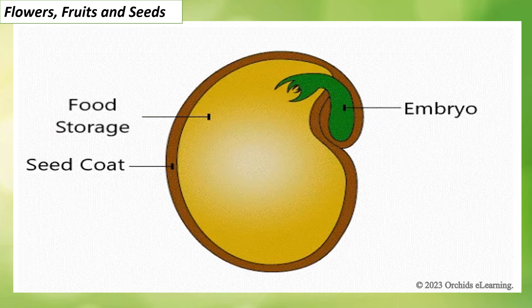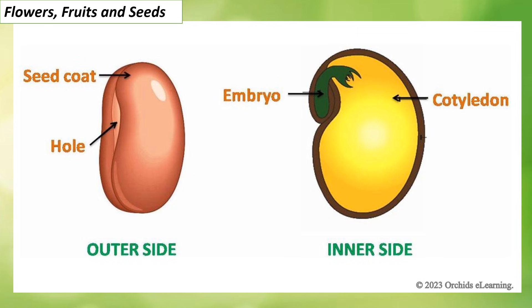Look at the structure of a bean seed. Under suitable conditions — availability of sufficient water, air, and warmth — a seed becomes a baby plant. The seed coat protects the embryo; the pore allows water to enter the seed. Inside, the embryo contains a young root and shoot which develop into a baby plant. Cotyledons contain food for the baby plant.